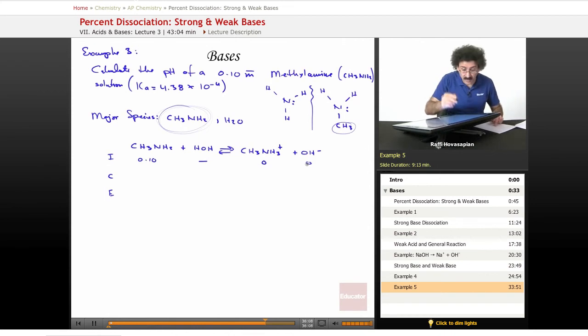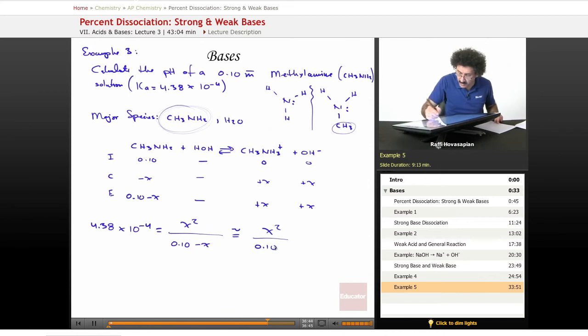As the system comes to equilibrium, this species disappears, this species appears, and this species appears. At equilibrium, we're left with 0.100 minus X. This doesn't matter, that doesn't matter. This is plus X, this is plus X. Now, we have 4.38 times 10 to the negative 4 is equal to this times that divided by that, X squared over 0.10 minus X, approximately equal X squared over 0.10.